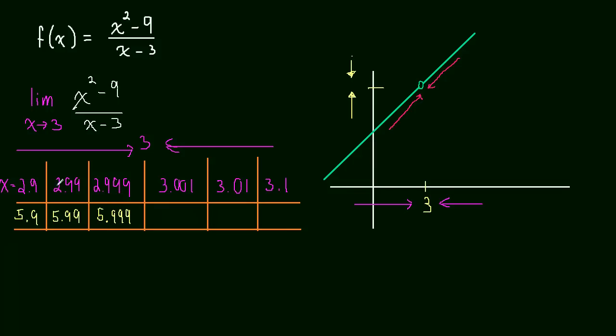If we do the other values, we're going to get 6.1, 6.01, and 6.001. So as x is squeezing in on 3, and remember, let me just shift this over a little bit to give myself a little bit of padding.